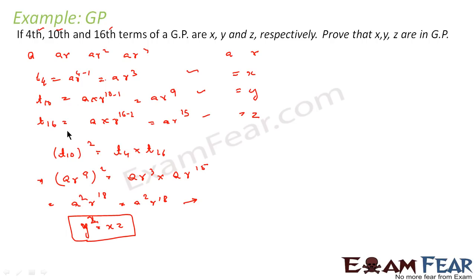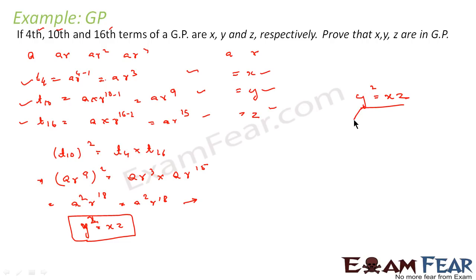We have proved that y² = xz. Please note: we were told that the 4th, 10th, and 16th terms are x, y, and z respectively. To prove that x, y, z are in GP we need to prove y² = xz. Since y = ar⁹, x = ar³, and z = ar¹⁵, we have shown y² = xz, so x, y, z are in GP.